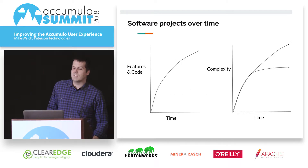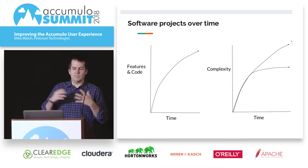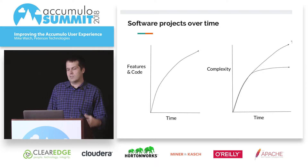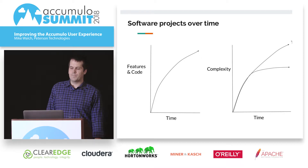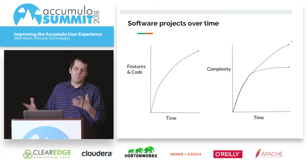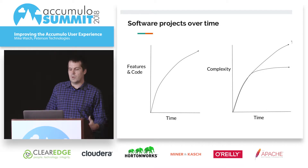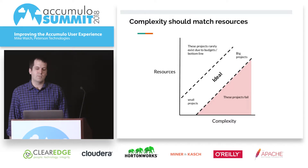Reducing complexity is kind of difficult. Software projects — open source and closed source — the number of features and code just increases over time. The complexity of that code increases, and it's really hard to reduce that complexity. There's more motivation to add features than to refactor things; it's just the way open source projects work. I'd like to see Accumulo reduce this complexity and not just keep adding features. If there are critical new features — and there are some great new features in 2.0 — we also need to do that refactoring.